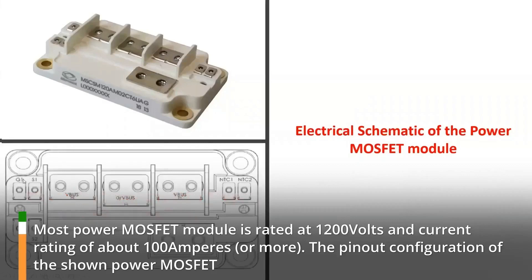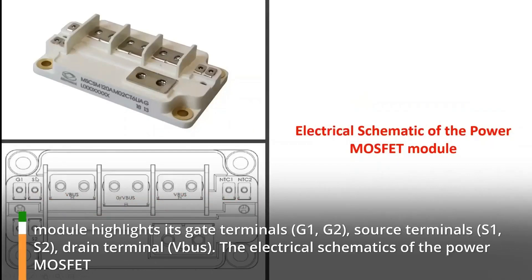The pin-out configuration of the shown power MOSFET module highlights its gate terminals, G1, G2, source terminals, S1, S2, and drain terminal bus.